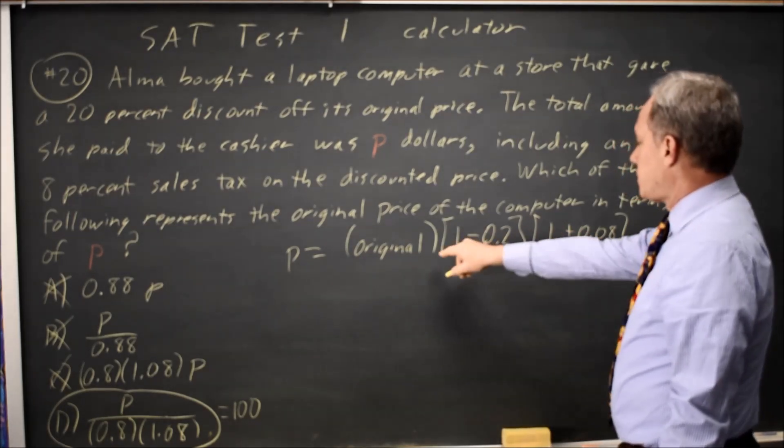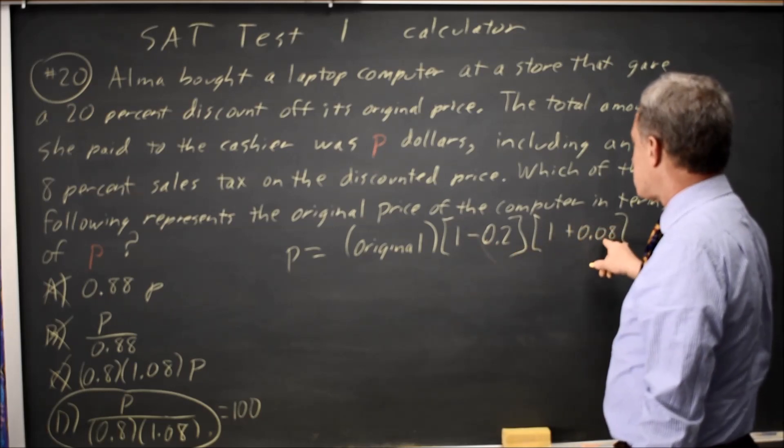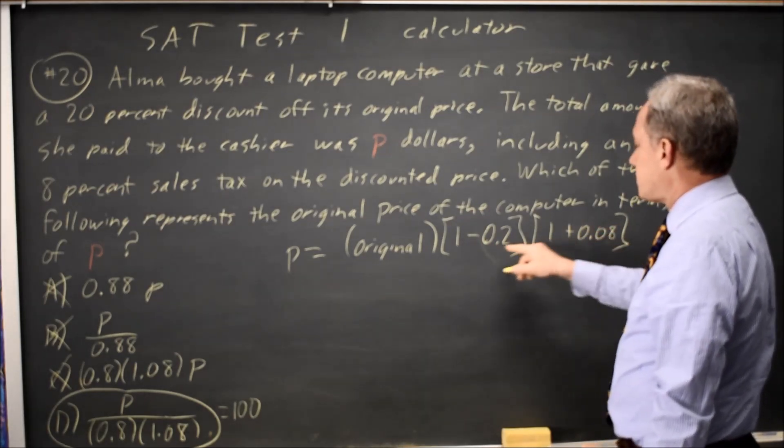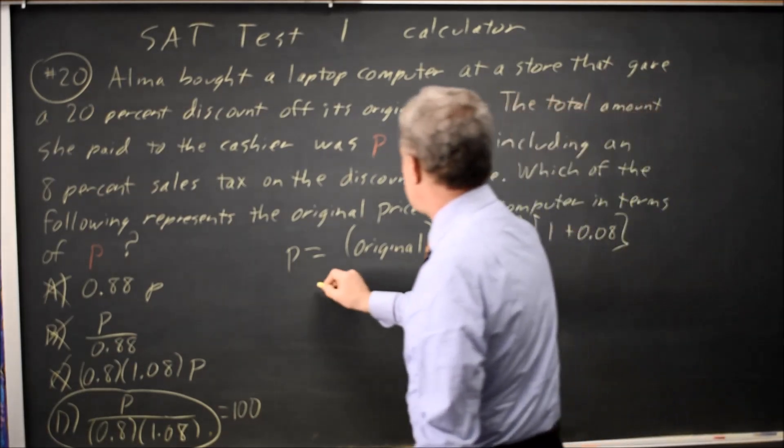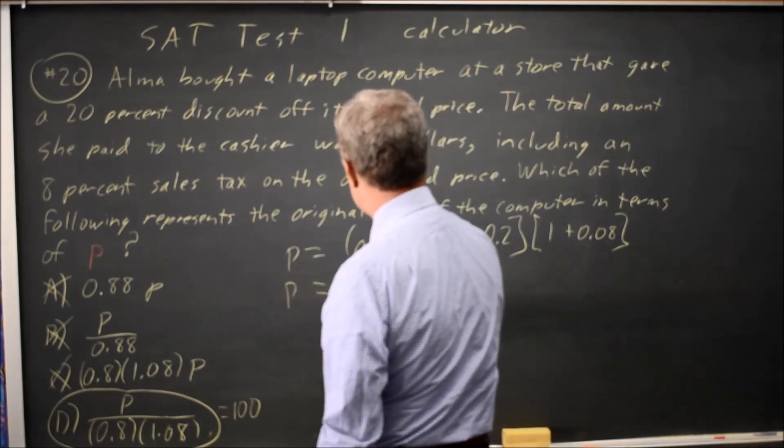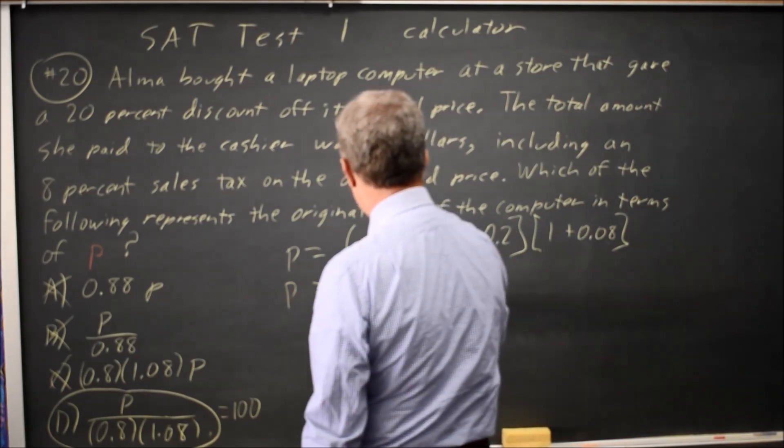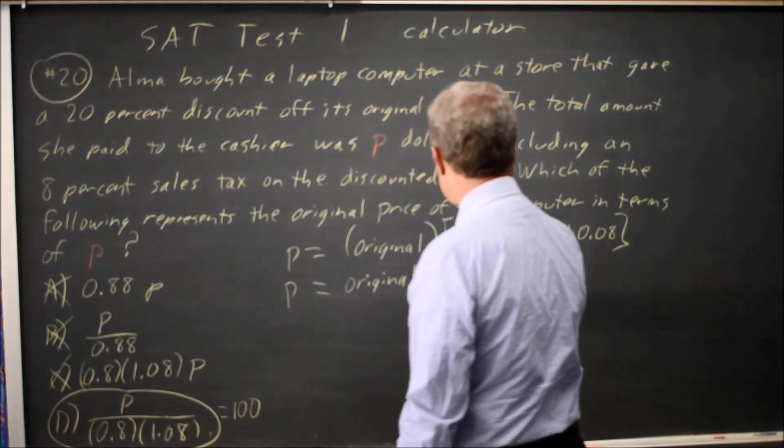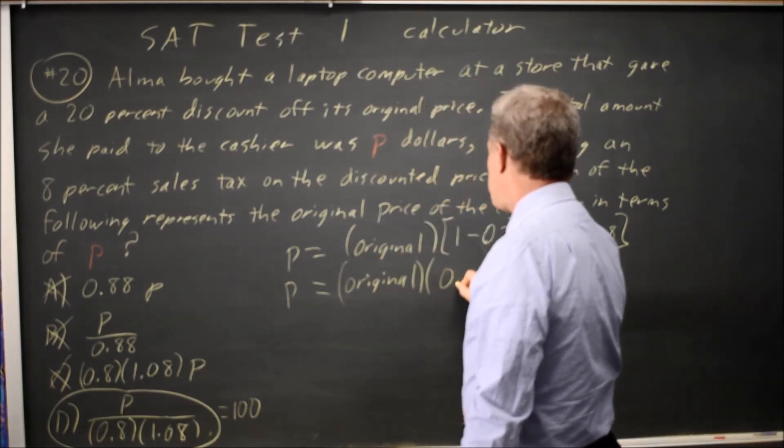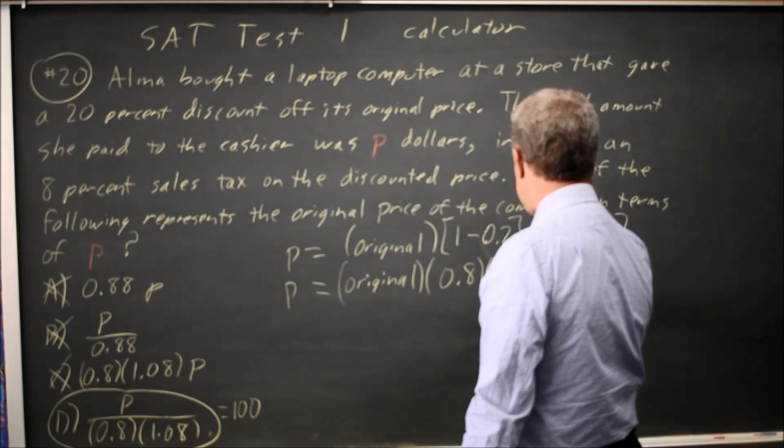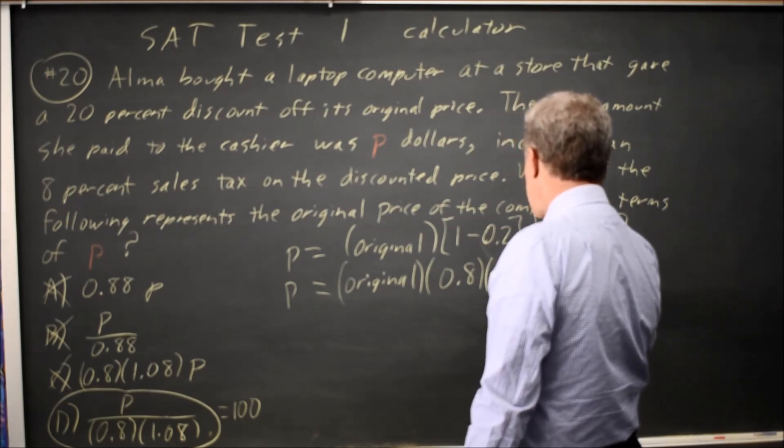So this 1 times our discounted price is our price, plus .08 times the discounted price is our tax. So that's P equals the original times 1 minus .2 is .8, and 1 plus .08 is 1.08.